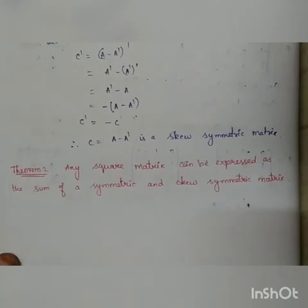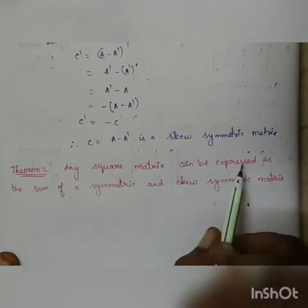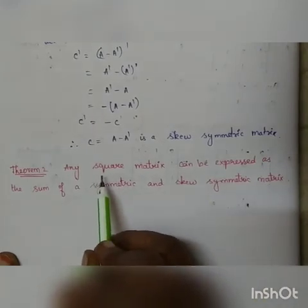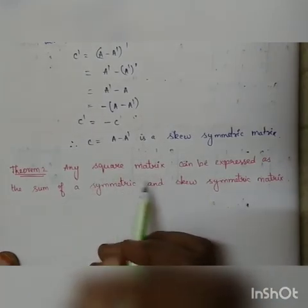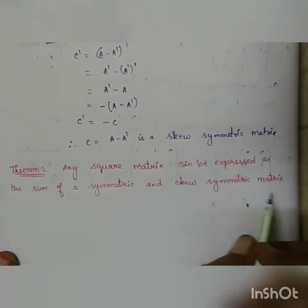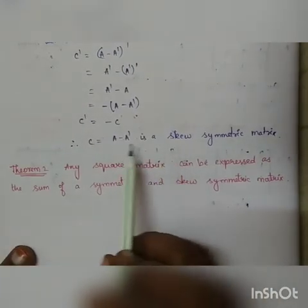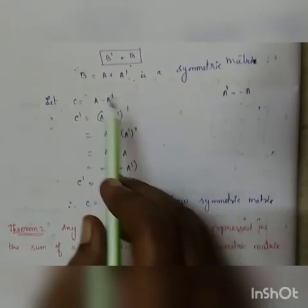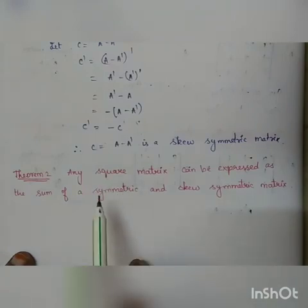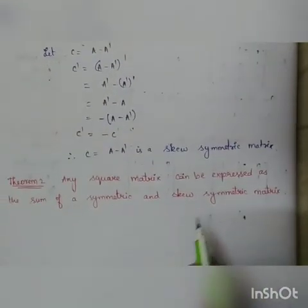The next theorem we are going to discuss is Theorem 2: any square matrix can be expressed as the sum of a symmetric and a skew symmetric matrix. We have just discussed that A minus A transpose gives a skew symmetric matrix and A plus A transpose gives a symmetric matrix, and we are going to show that any square matrix can be expressed as the sum of these two.